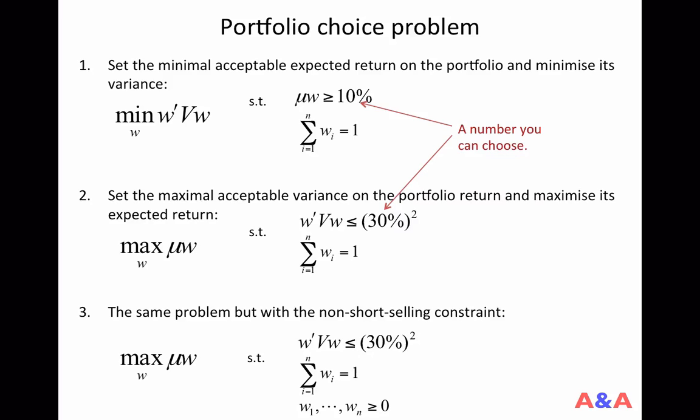Now, the second type of portfolio choice problem is to maximize the expected return of the portfolio, setting the maximal acceptable risk of the portfolio. Here, remember the variance, this is the variance of the portfolio return, and the variance is the square of the standard deviation. So in this example, the maximal acceptable level of the standard deviation is said to be 30%.